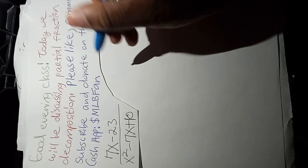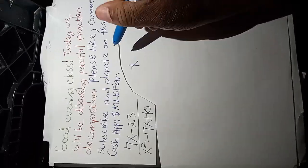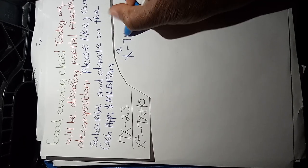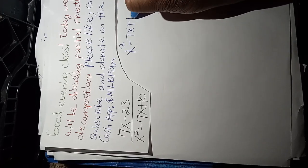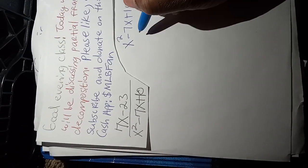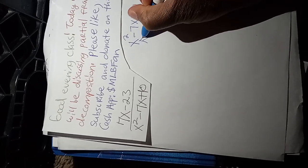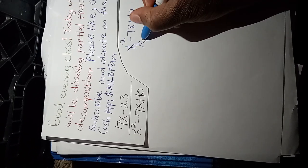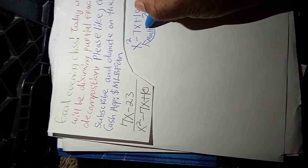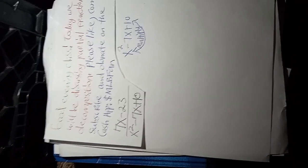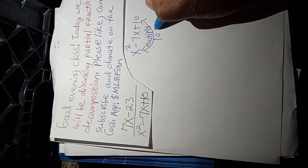First, we want to factor the denominator, and that is x squared minus 7x plus 10. We want to multiply the first and third terms to factor by grouping. So x squared times 10 is 10x squared.